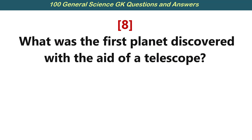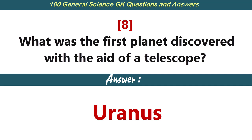What is the first planet discovered with the aid of a telescope? Answer: Uranus.